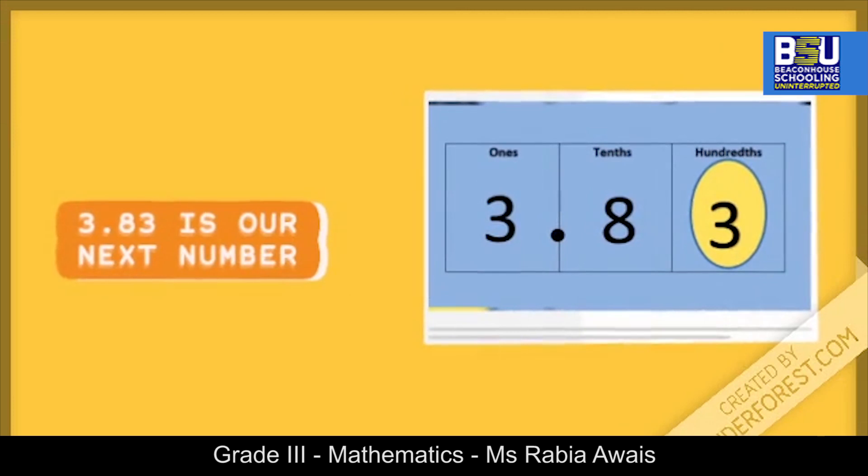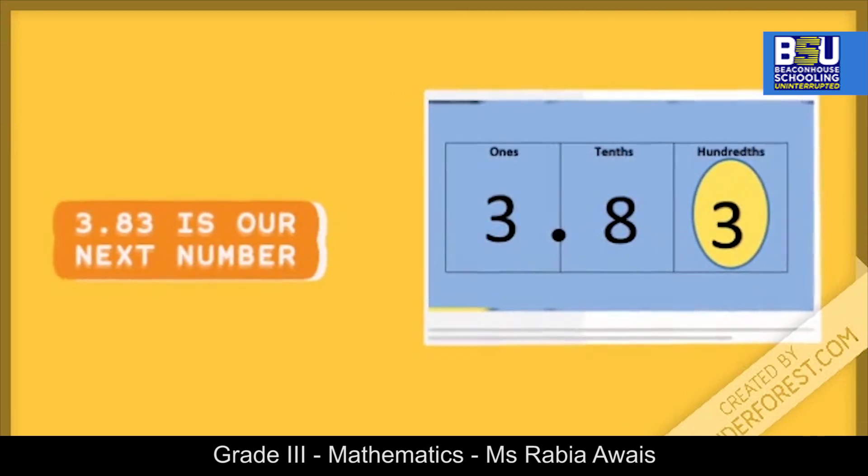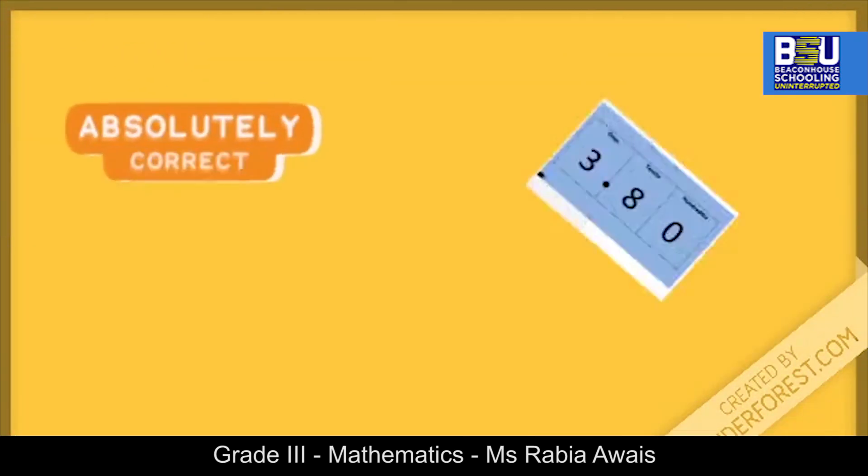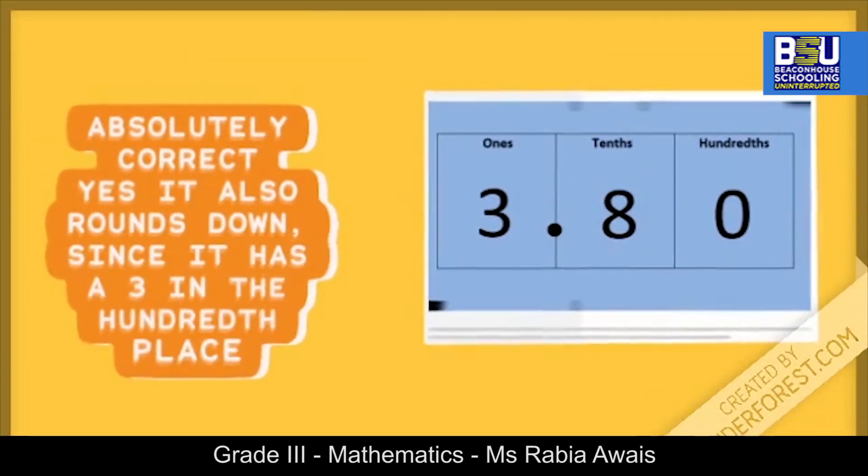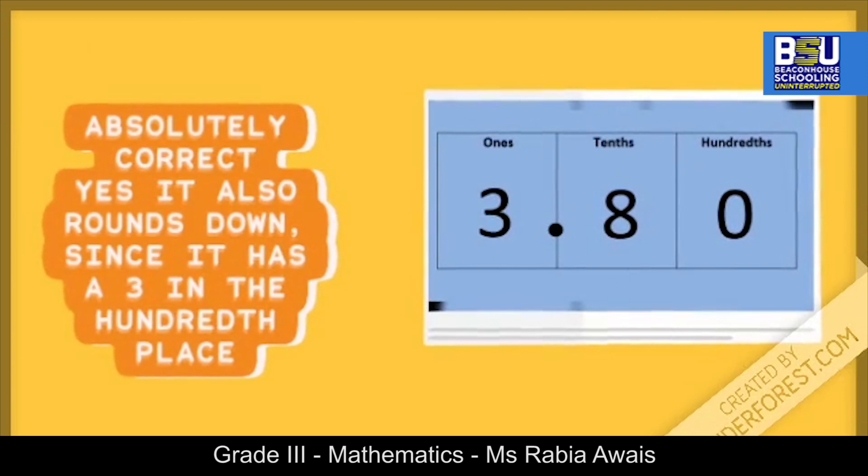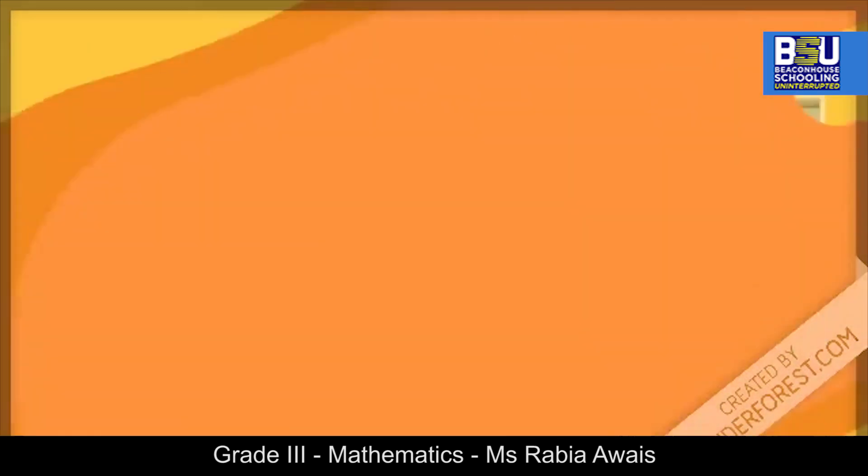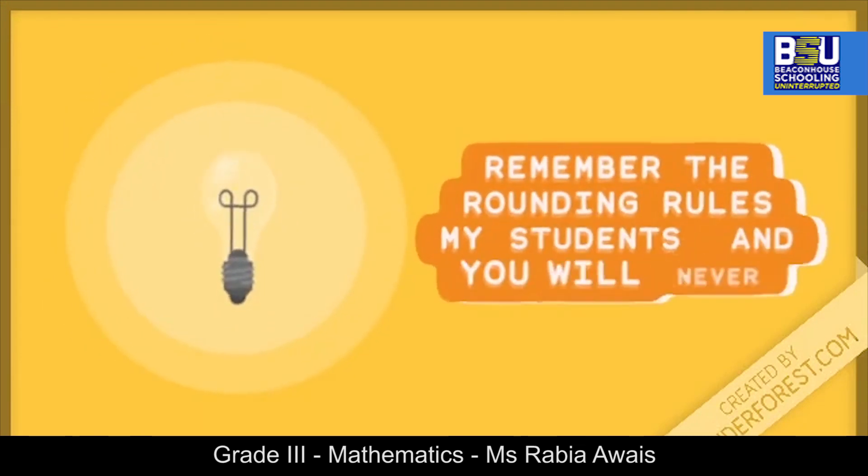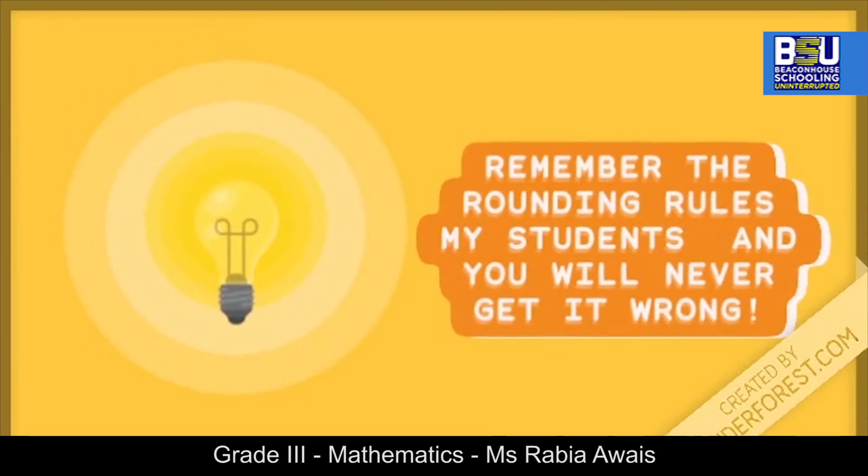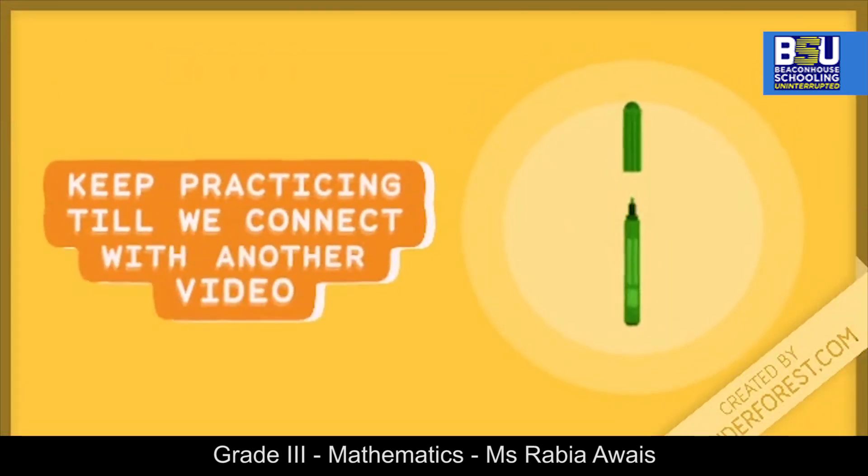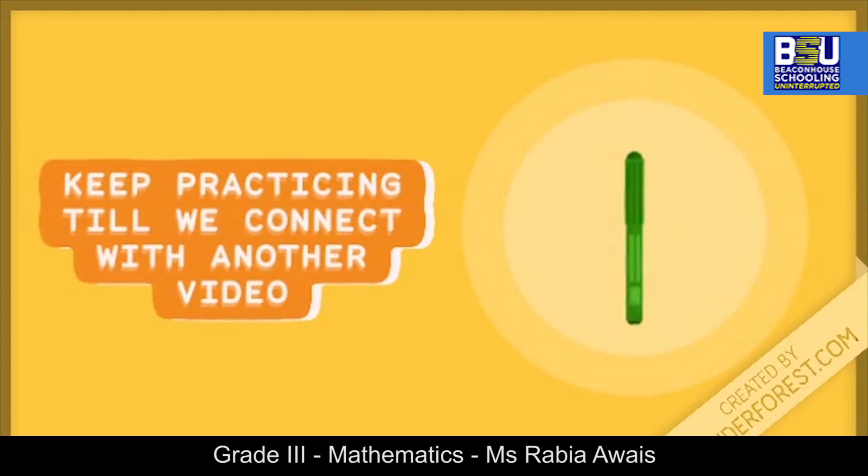3.83 is our next number. It also rounds down since it has 3 in the hundredth place, so it becomes 3.8. Remember the rounding rules, my students, and you will never get it wrong. Keep practicing till we connect with another video.